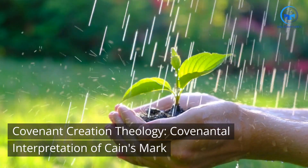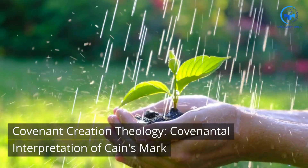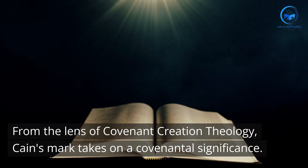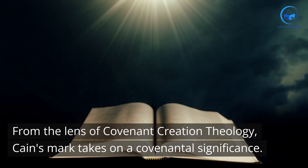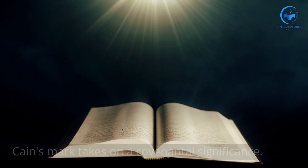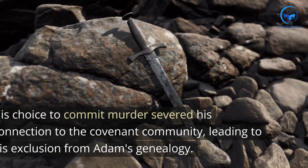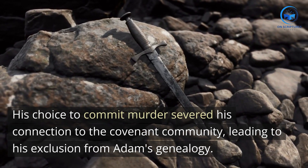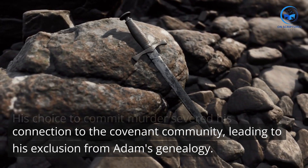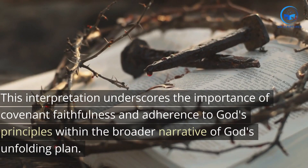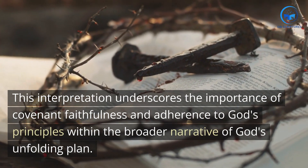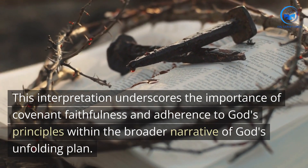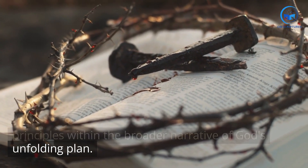From the lens of Covenant Creation Theology, Cain's mark takes on a covenantal significance. His choice to commit murder severed his connection to the covenant community, leading to his exclusion from Adam's genealogy. This interpretation underscores the importance of covenant faithfulness and adherence to God's principles within the broader narrative of God's unfolding plan.